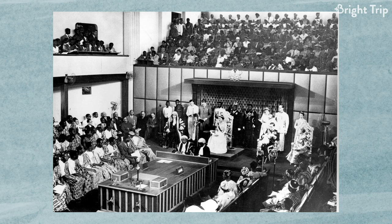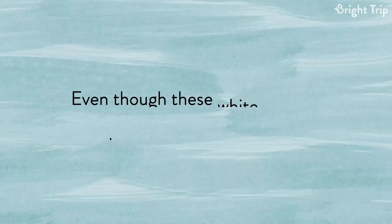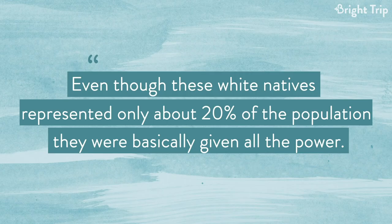This transfer of power happened slowly over the course of decades, and the power was transferred mainly to white Afrikaners as well as English-speaking whites who were left over from the British era. Even though these white natives represented only about 20% of the population, they were basically given all the power. Black South Africans had little participation in the newly independent country — a country that was already highly divided — and not long after, the country would begin writing laws that would divide the nation even further.